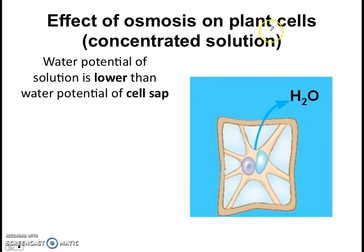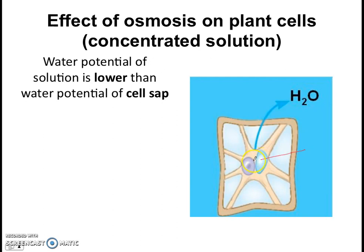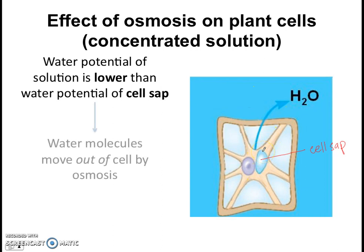Imagine I took a plant cell and placed it in a very concentrated solution — maybe a very high percentage of salt, starch, or sucrose solution. In this case, the water potential of the solution is low because it's very concentrated. So the water potential of the solution is probably lower than the cell sap. The cell sap is the fluid found inside the vacuole. Because the water potential of the solution is lower than the cell sap, water molecules will move out of the cell by osmosis.